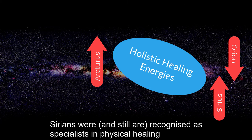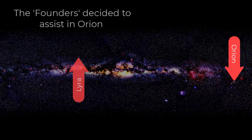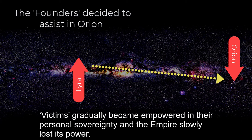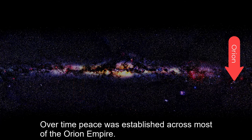Sirians were, and still are, recognised as specialists in physical healing. The Founders decided to assist in Orion. Twelfth Density Consciousness, in the form of an Orion Christ, reminded them they were multi-dimensional beings. Victims gradually became empowered in their personal sovereignty, and the empire slowly lost its power. Over time, peace was established across most of the Orion Empire.